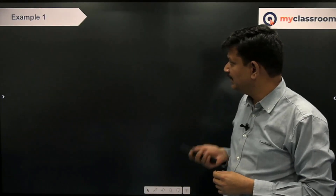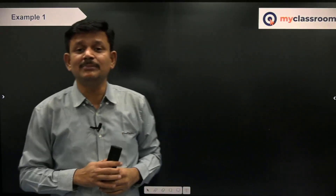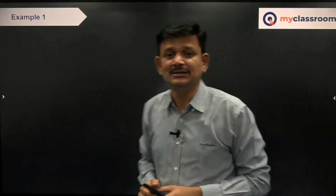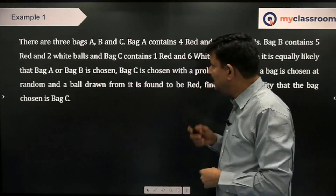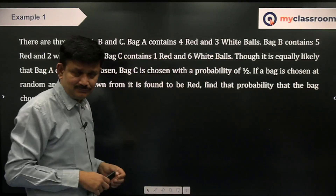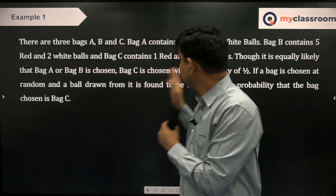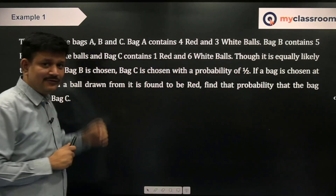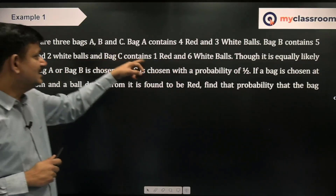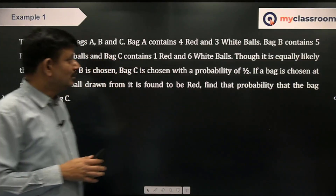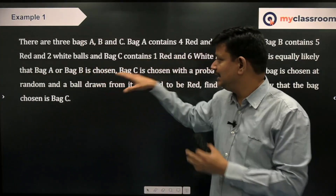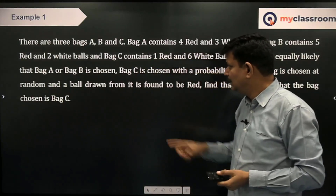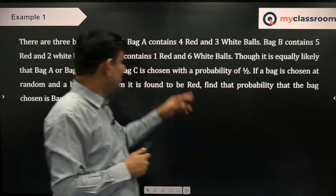Let us see some applications on Bayes' Theorem. How to identify whether a question is on Bayes' Theorem? If the final outcome is given to you and you are checking the probability of an intermediate, that is when you use Bayes' Theorem. Let us look at this question. There are three bags A, B, and C. Bag A contains 4 red and 3 white balls. Bag B contains 5 red and 2 white balls. Bag C contains 1 red and 6 white balls. It is equally likely to choose bag A or bag B. Bag C is chosen with a probability of 1/2.